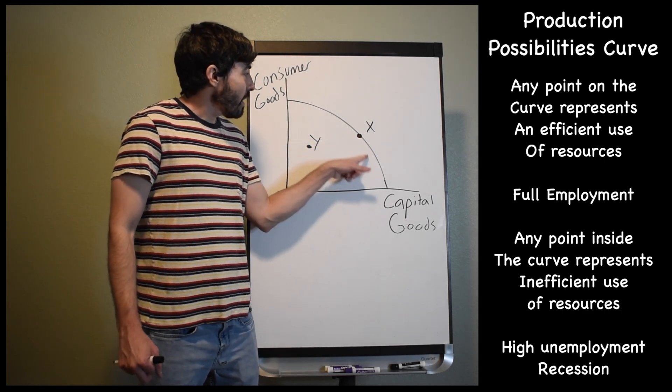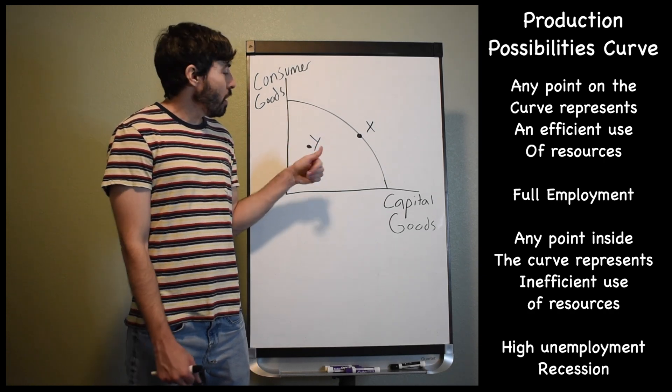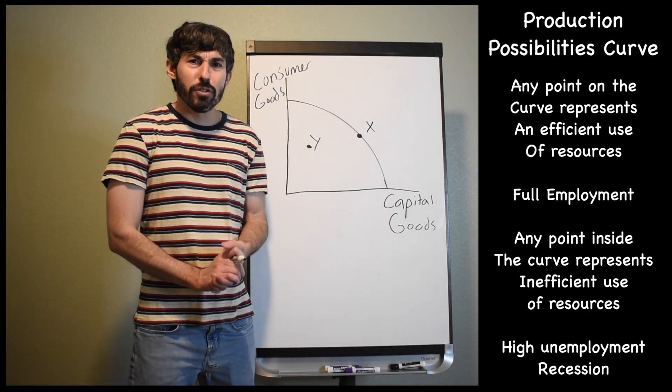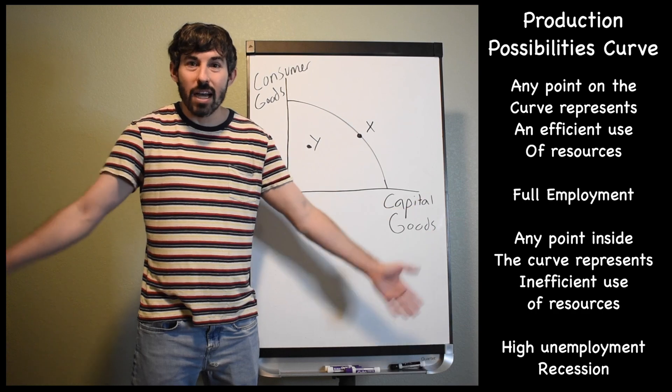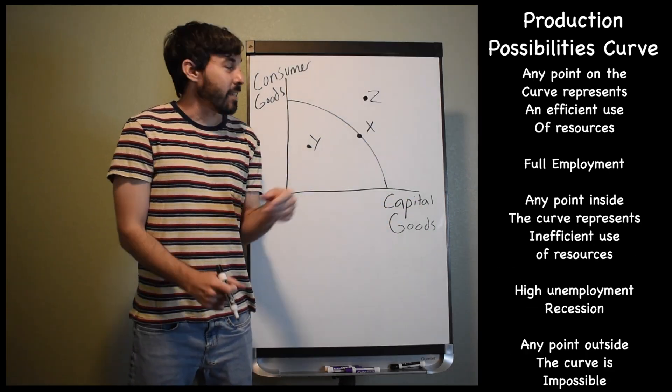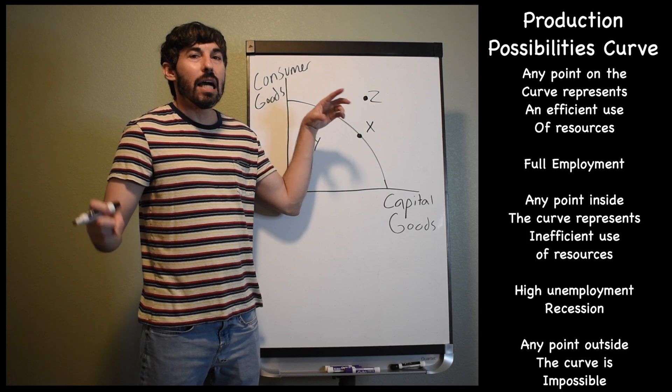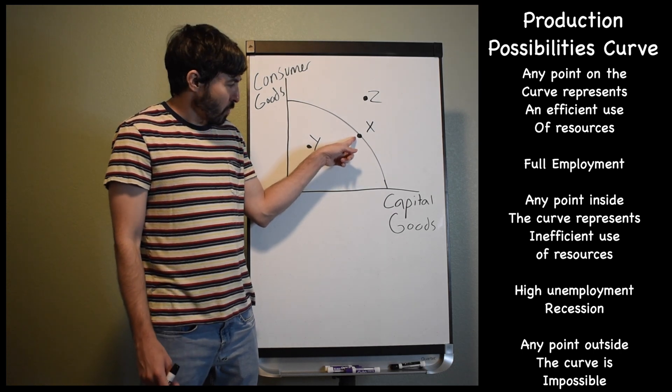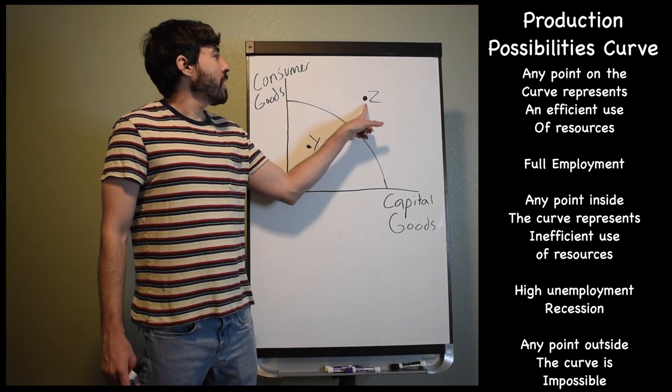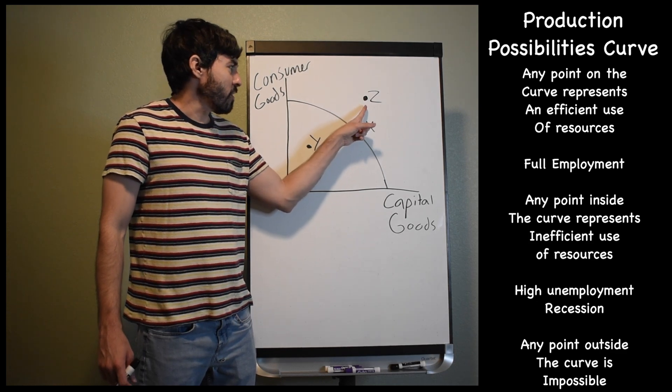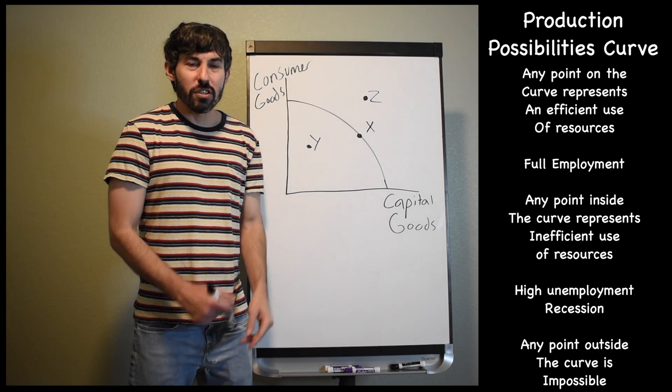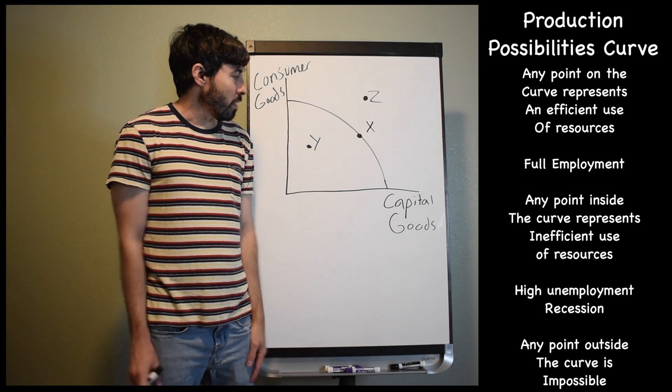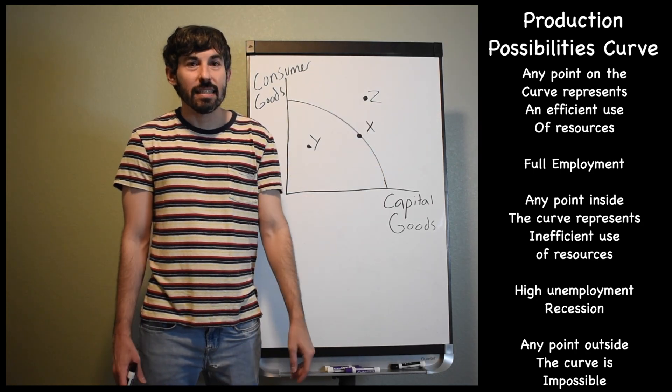So this is going to be showing high unemployment and a recession. So we can still produce as much stuff as we could before, we just currently are not because we are in a recession. Everybody's losing their jobs, businesses aren't hiring people, and they're not producing goods and services because nobody's working, so nobody's buying things, and everything's just getting terrible. Any point outside the curve is going to be impossible, infeasible, not doable. We could produce, I don't know, 50 consumer goods and 100 capital goods in one year, but we couldn't make 100 capital goods and 100 consumer goods in one year because we just don't have the resources. Maybe we don't have enough workers. Maybe we don't have enough factory space or just land in general. We cannot produce as much. It's impossible.